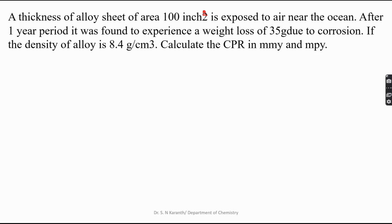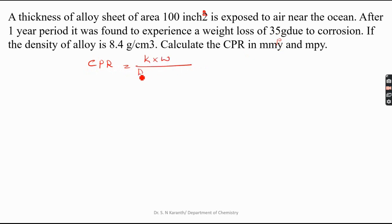Problem 2: The thickness of a large sheet of area 100 inch square is exposed to air near the ocean. After a one-year period, it was found to experience a weight loss of 35 grams due to corrosion. If the density of the alloy is 8.4 grams per cm³, calculate CPR in MMPY and MPY units. CPR = K × W / (ρ × A × T).